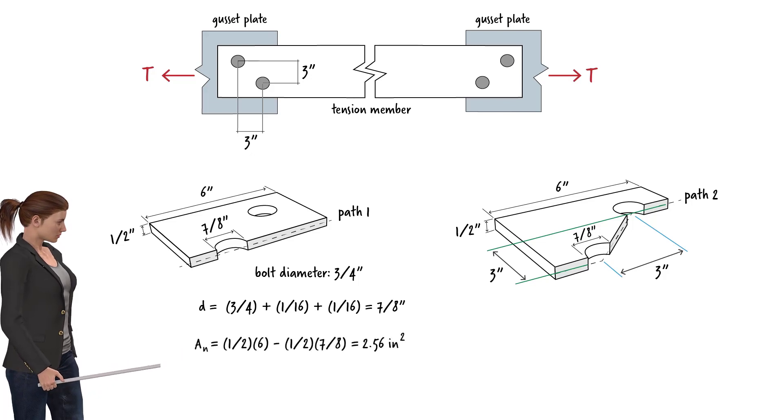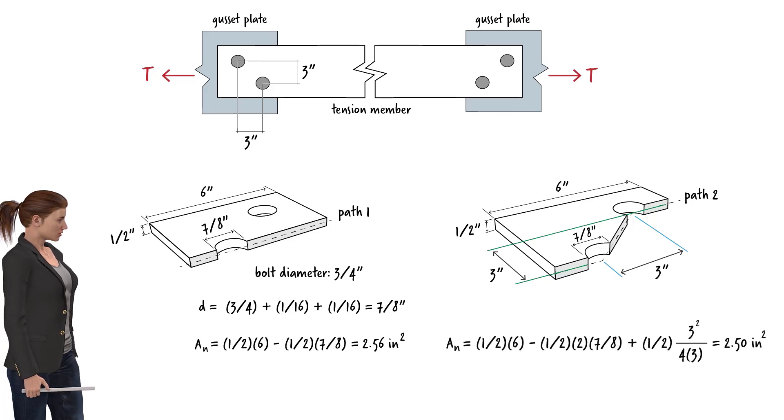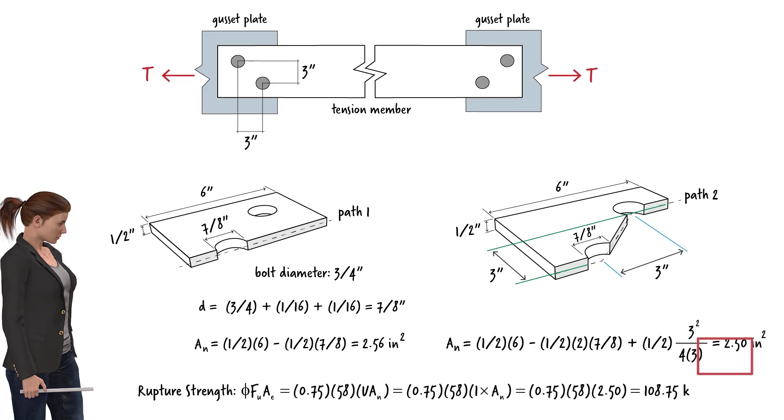Since path 2 has a smaller net area, it controls the design. This means we need to use 2.5 for calculating the rupture strength of the tension member. The rupture strength equals 108.75 kips.